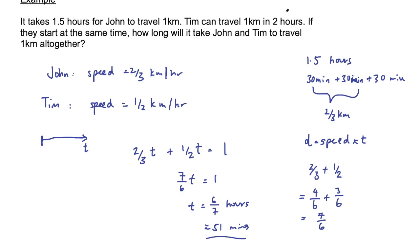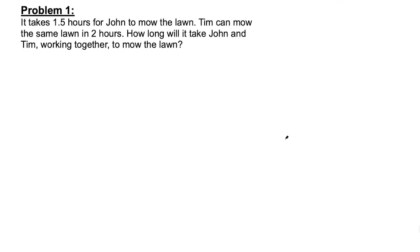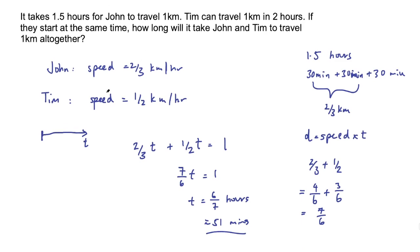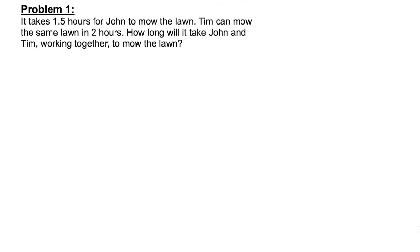Hopefully that was slightly more intuitive because we're thinking about speed and distance, and we know distance equals speed times time. Now I want to look at a pretty much identical work rate problem. This problem says it takes 1.5 hours for John to mow the lawn; Tim can mow the same lawn in two hours. How long will it take John and Tim working together to mow the lawn? These are pretty much identical problems, but instead of distance and time, we're talking about lawns — and that's where the confusion can come in.